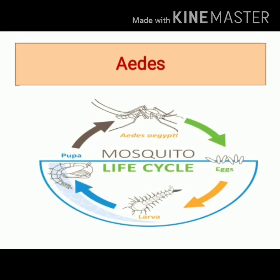The Aedes Mosquito completes its life cycle in four stages: egg, larva, pupa, and adult. The female Aedes Mosquito lays her eggs singly, and the eggs of the Aedes Mosquito are cigar shaped.